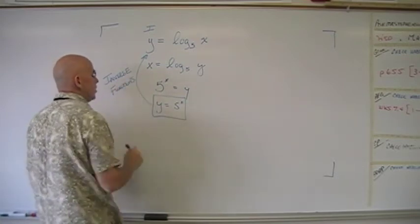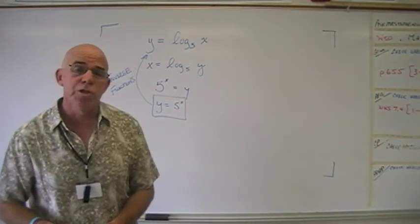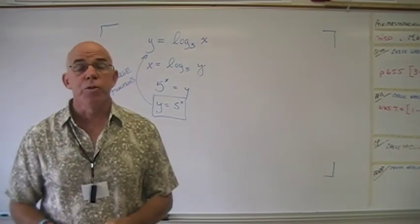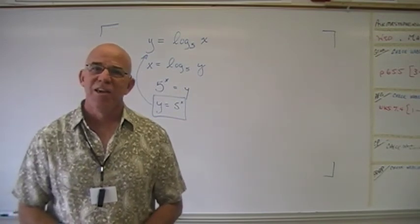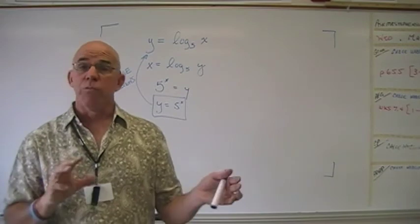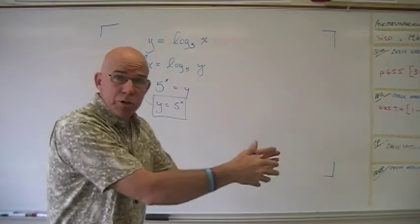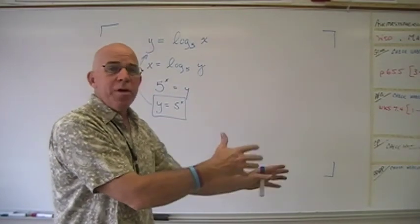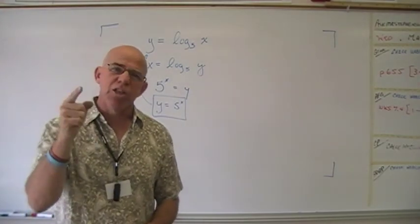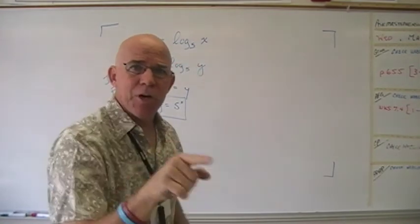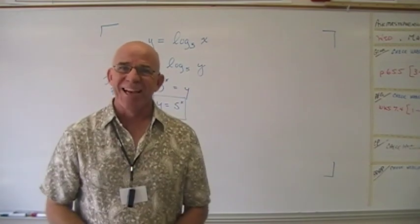Follow those steps to get it done. Remember: when you see log without a base written, the base is 10; when you see ln, the base is e — the natural log. This has been our first introduction to logarithms: how they relate to exponentials, that logs are the inverse of exponentials, how to rewrite between logarithmic and exponential form, and how to work with these on your calculators. Have fun, get stronger — we are Ask Academy!